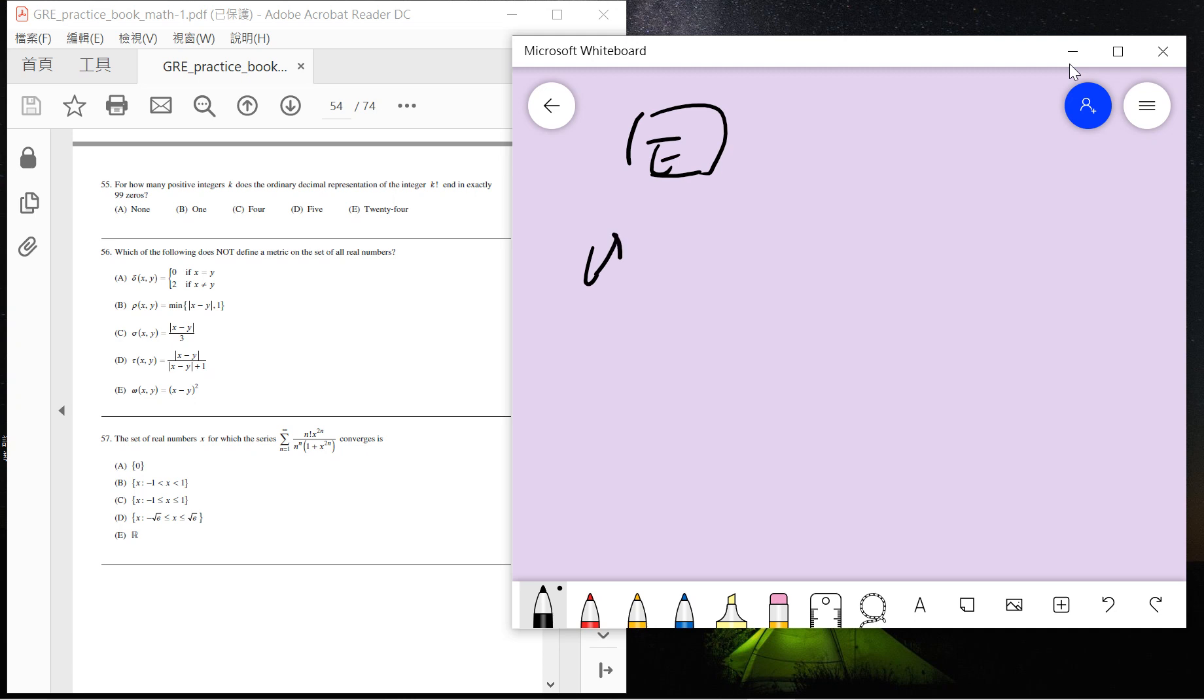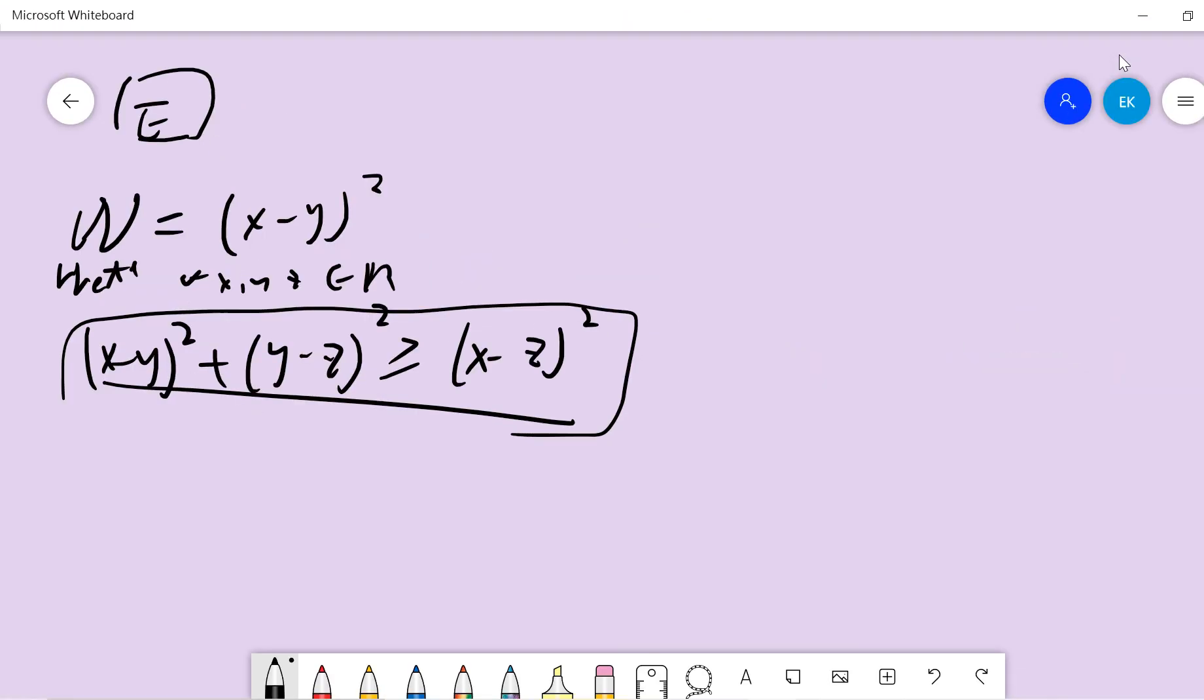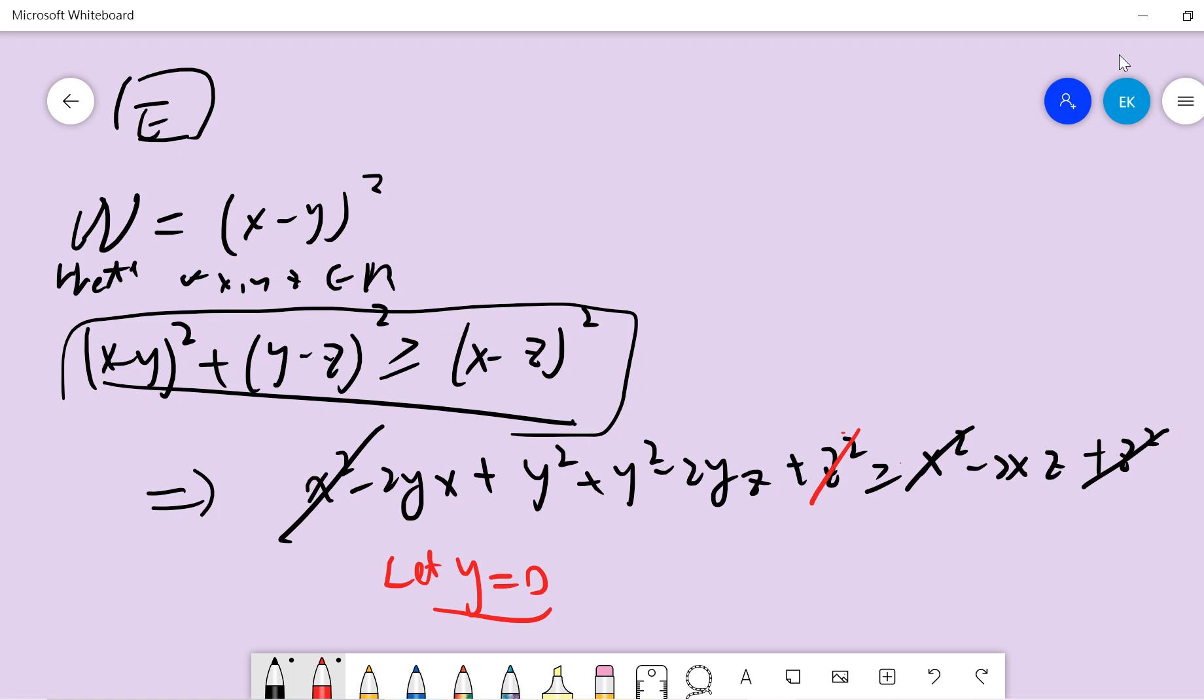And E defines W as (x-y) cubed. This is definitely not correct. I mean, you can check whether for all x, y, z belongs to R, this equality holds. You can check that this is definitely not correct. Supposedly, if it holds, then we have... we just expand it. Okay, so I can let y to be zero. Just to check where the identity... So when y equals zero, we have this.